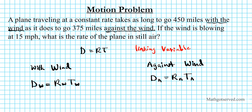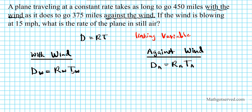Now we're going to ask ourselves: what is the linking variable in this case? In both cases, there is something that is constant — exactly the same in both scenarios. Are they traveling the same distance? Are they traveling at the same rate in both cases? Or are they traveling for the same time period? If we list everything we have, we can identify the linking variable.